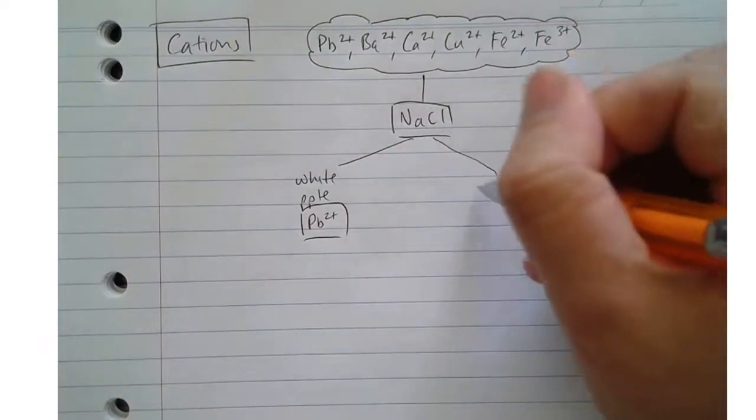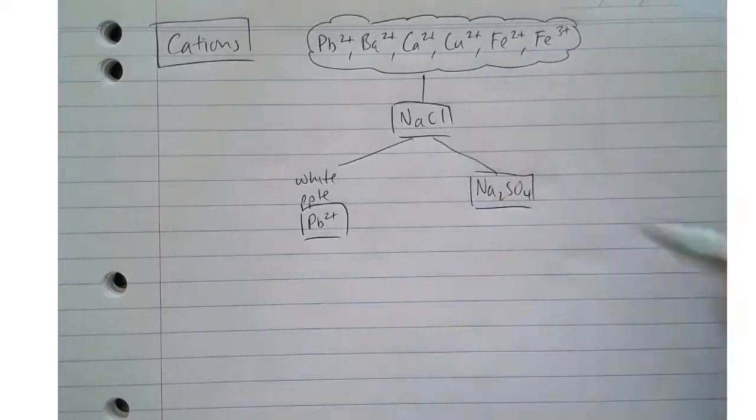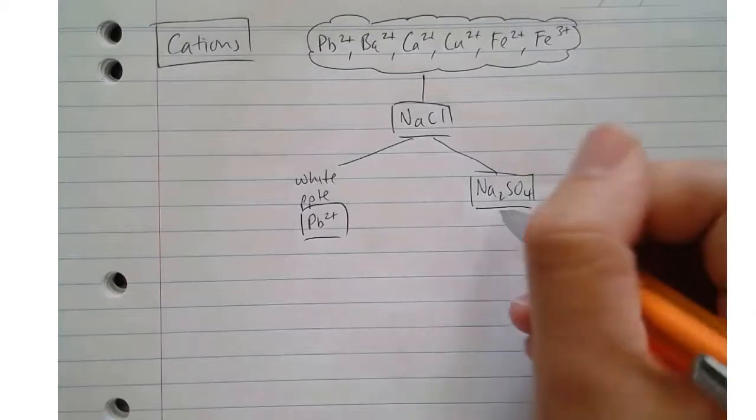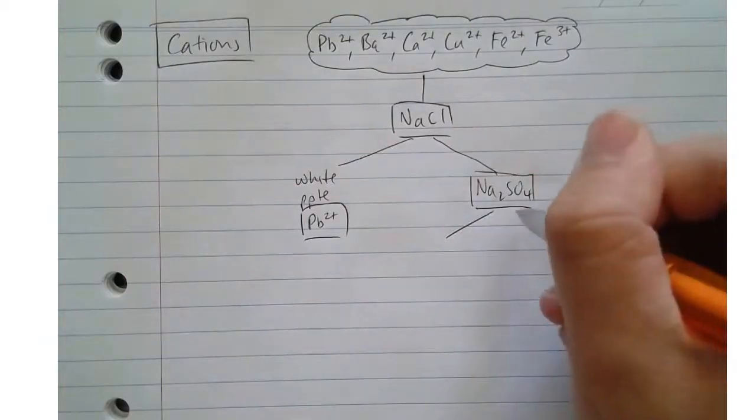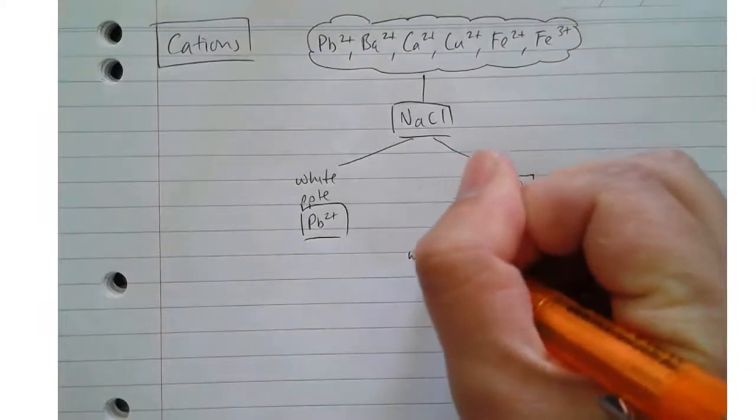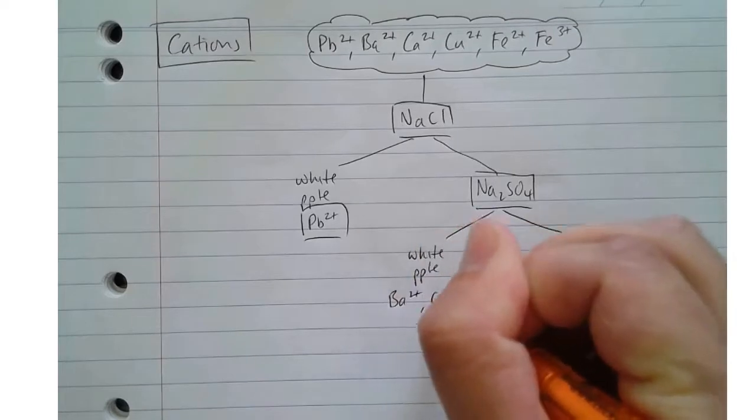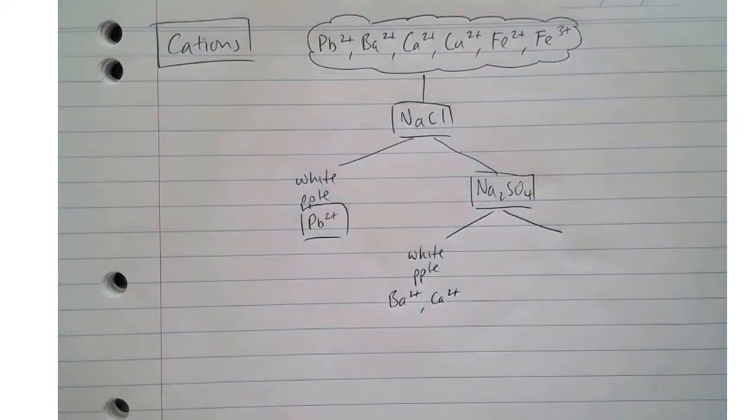So the next thing that we're going to do, if we don't get a precipitate, is add sodium sulphate. What we will see is we'll get two substances that will precipitate, the rest won't. We'll get white precipitate, and that's with barium and calcium, and then the remainder won't.